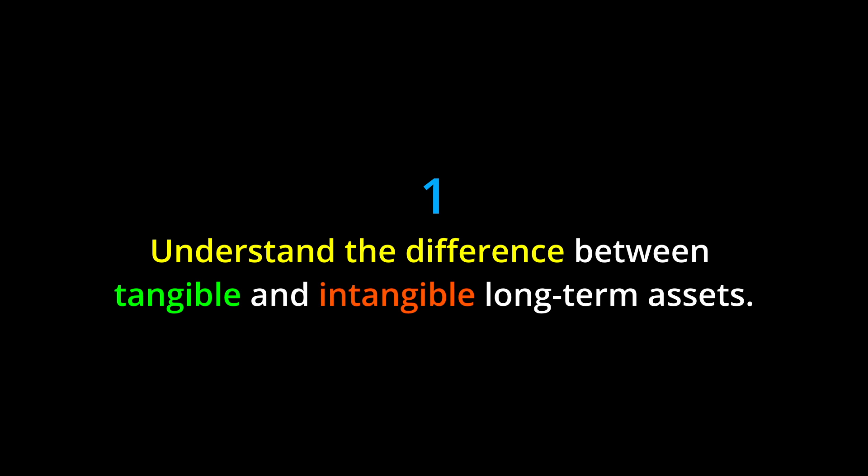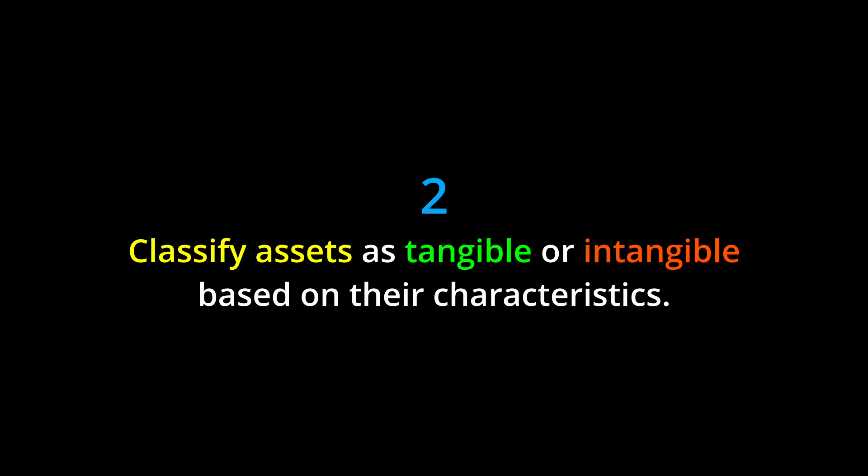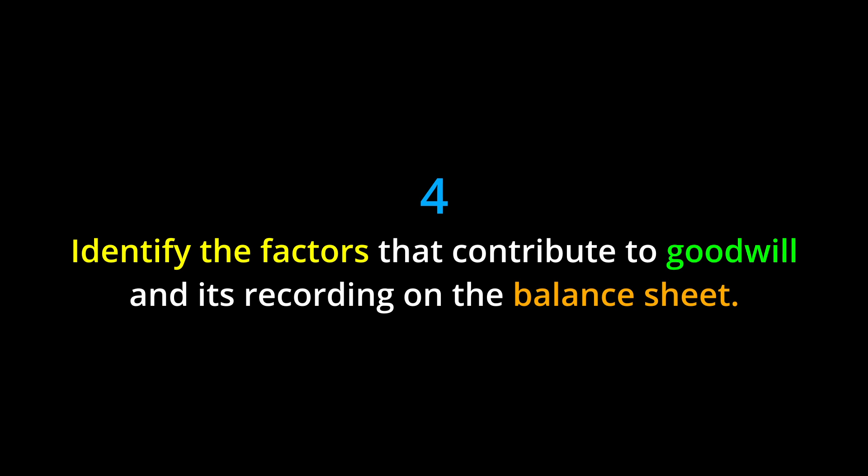By the end of this chapter you should be able to: one, understand the difference between tangible and intangible long-term assets; two, classify assets as tangible or intangible based on their characteristics; three, explain the process of capitalizing costs and allocating them over an asset's useful life.